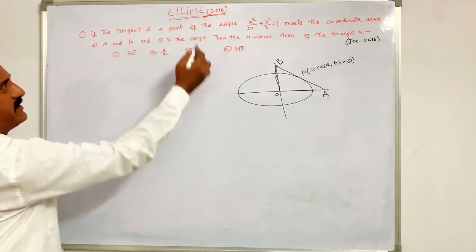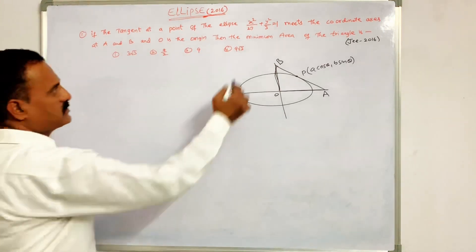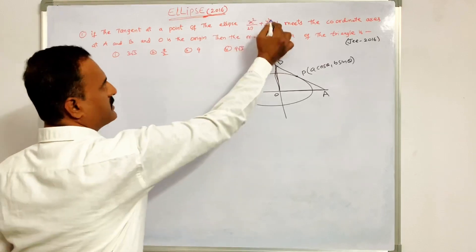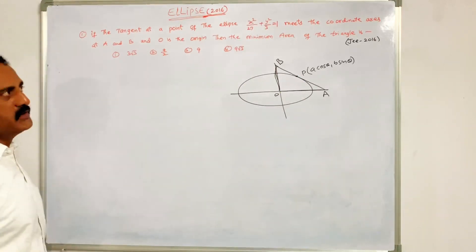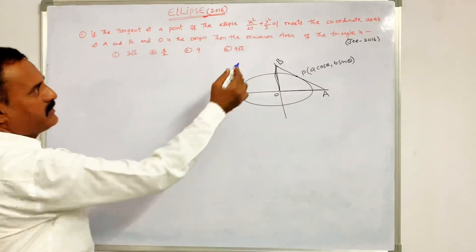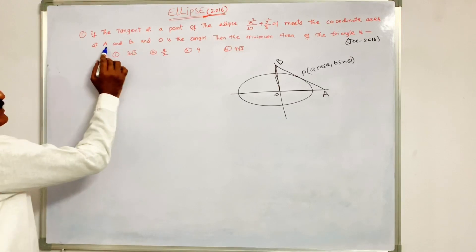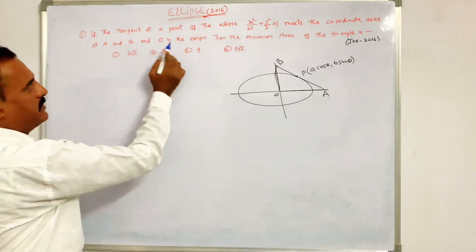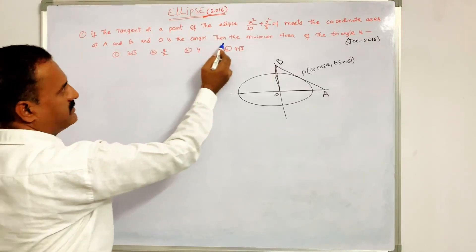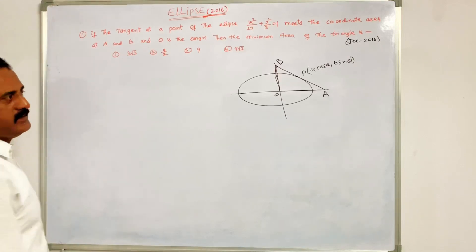If the tangent at a point of the ellipse x²/27 + y²/3 = 1 meets the coordinate axes at capital A and capital B, and O is the origin, then the minimum area of the triangle is?